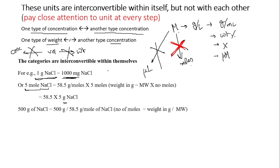Molecular weight is a constant used for interconversion within the same parameter. The molecular weight of sodium chloride is 58.5 grams per mole. Pay close attention to units at every step.